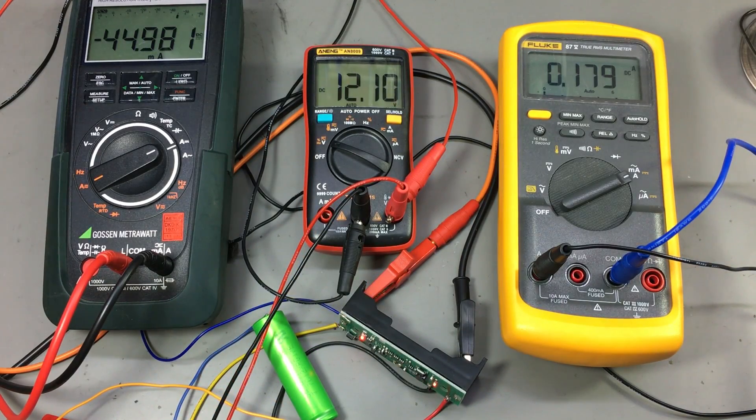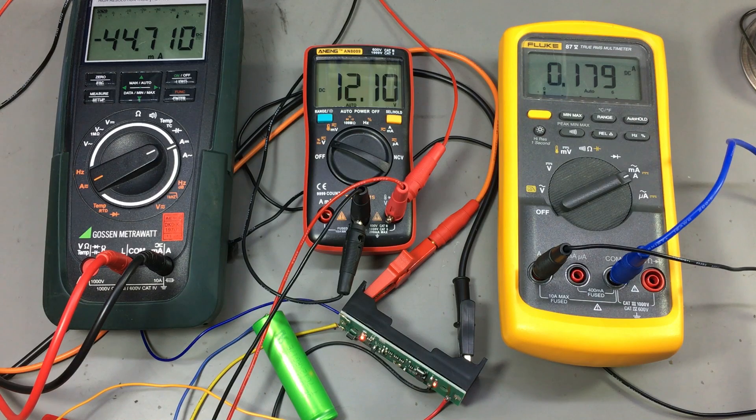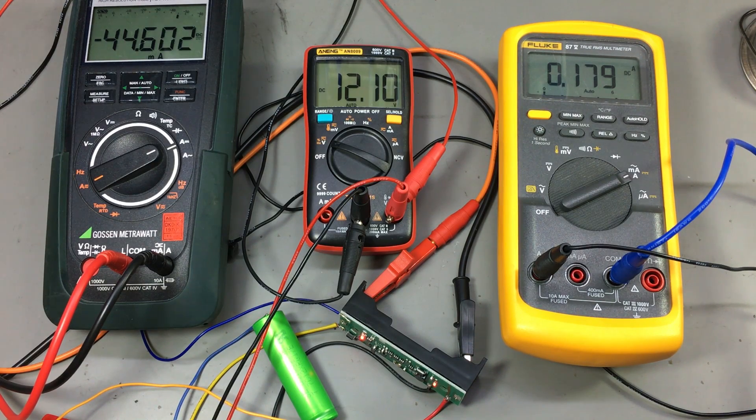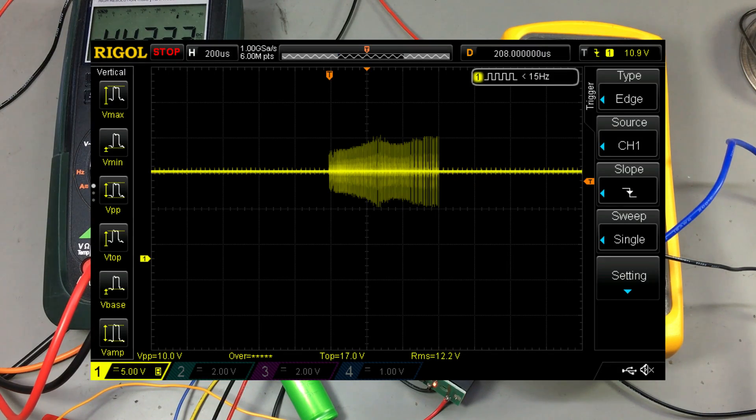I've also hooked up the oscilloscope to the output of this DC converter just to watch how that 12V rail behaves when the switching occurs between the two inputs. And this is a screen capture of the scope.